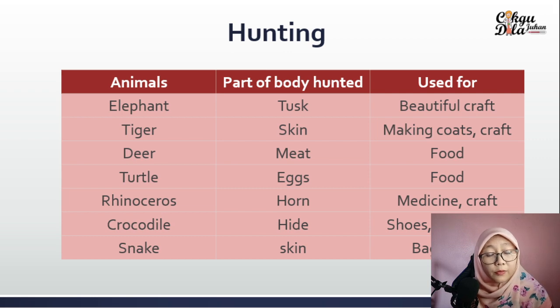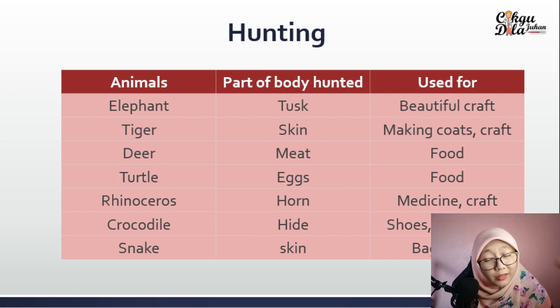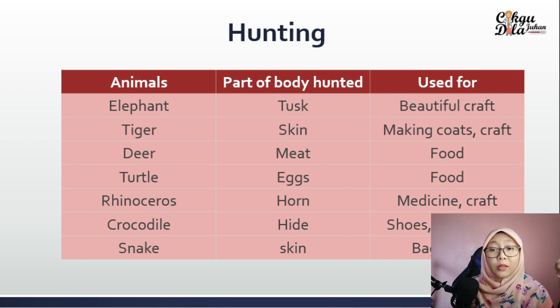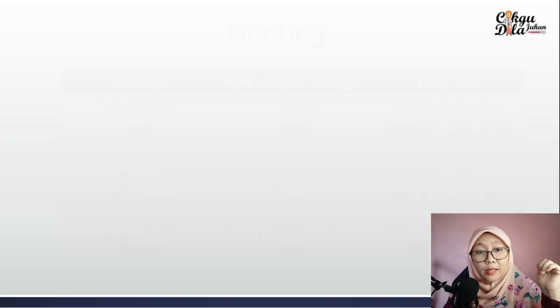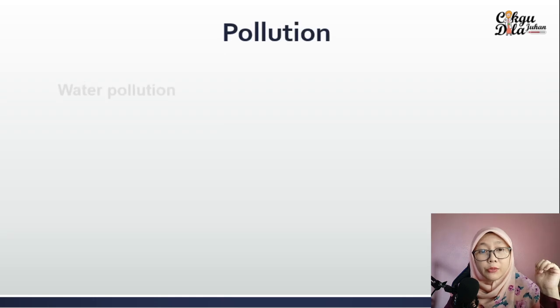Crocodile hide is taken to make shoes, belts, and bags. Snake skin is also taken to make belts or bags. Next we move to pollution.